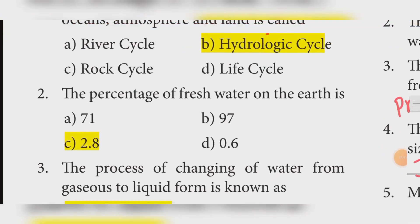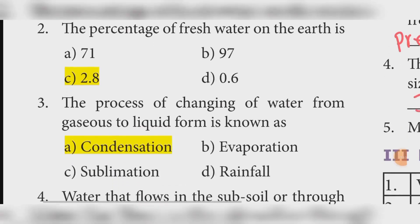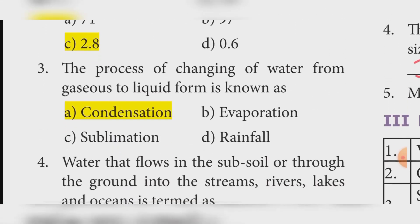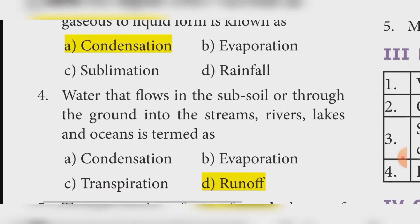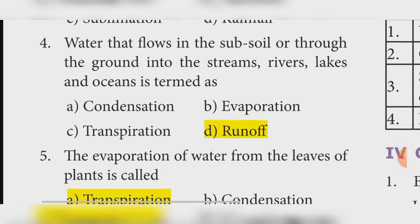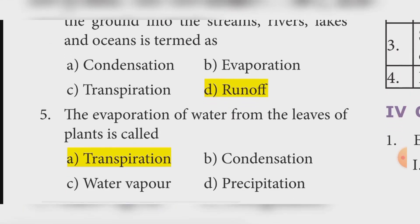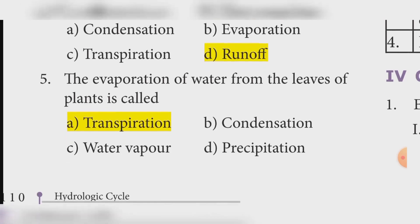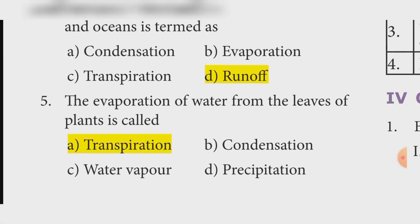Third: The process of changing water from gaseous to liquid form is known as? Answer: Option C — Condensation. Fourth: Water that flows on the surface or through the ground into streams, rivers, lakes, and oceans is termed as? Answer: Option C — Runoff. Fifth: The evaporation of water from the leaves of plants is called? Answer: Transpiration.